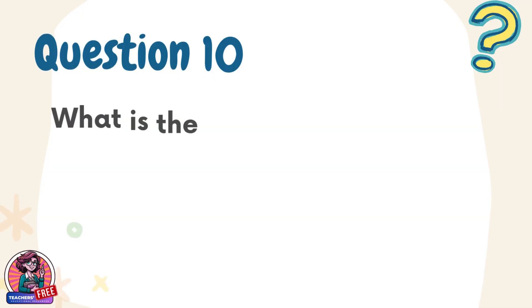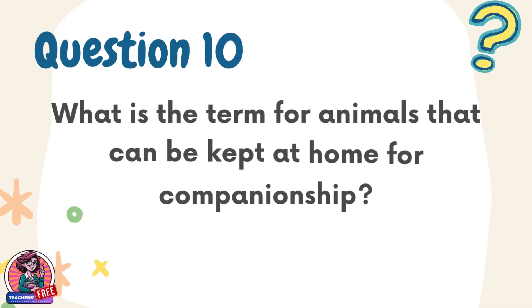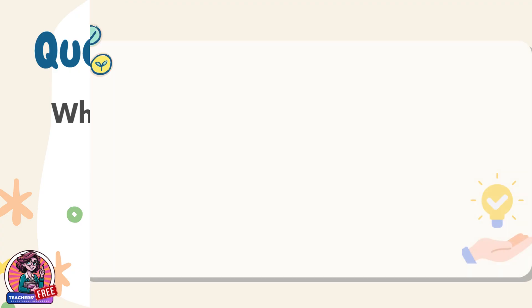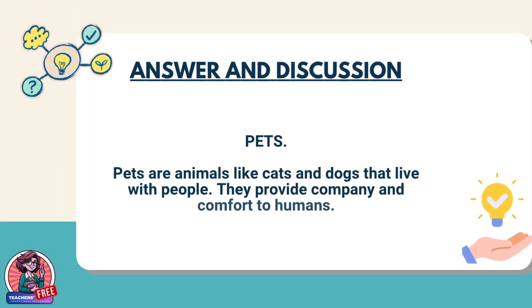Question 10. What is the term for animals that can be kept at home for companionship? Answer: Pets. Pets are animals like cats and dogs that live with people. They provide company and comfort to humans.